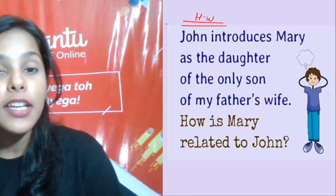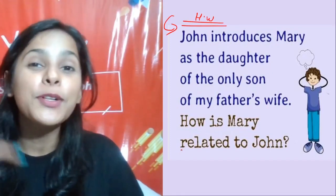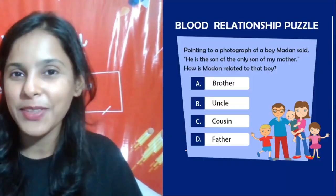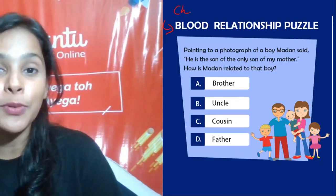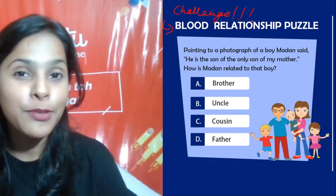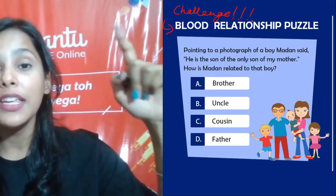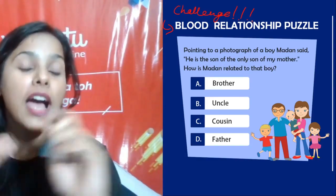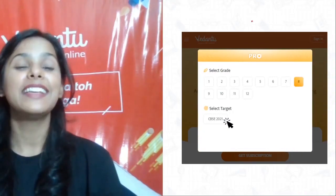Here's your homework — try to solve this question and let me know the answer in the comments. Also, let me know if you were able to solve the previous question without my help. And here's the challenge of the day — read the question properly, use arrow keys to denote generations, use boxes for husband and wife, and you'll solve it!